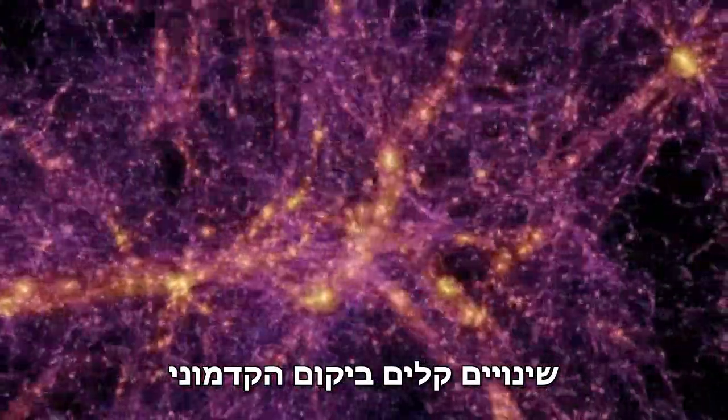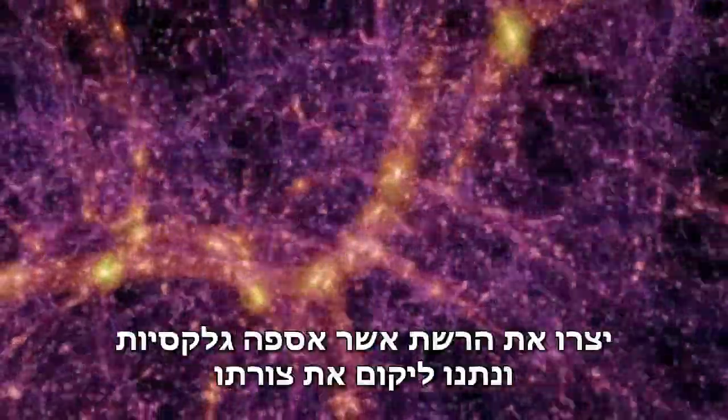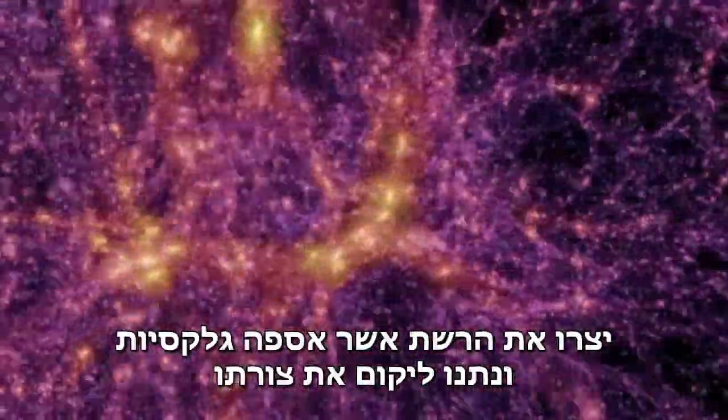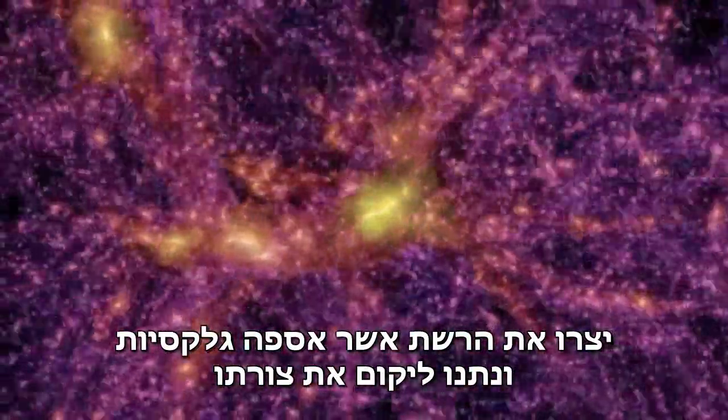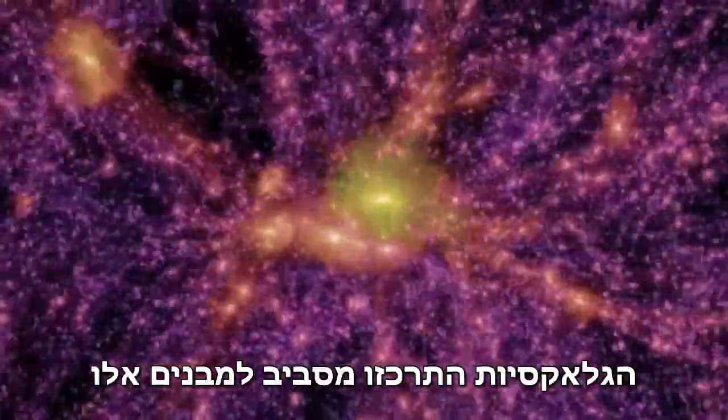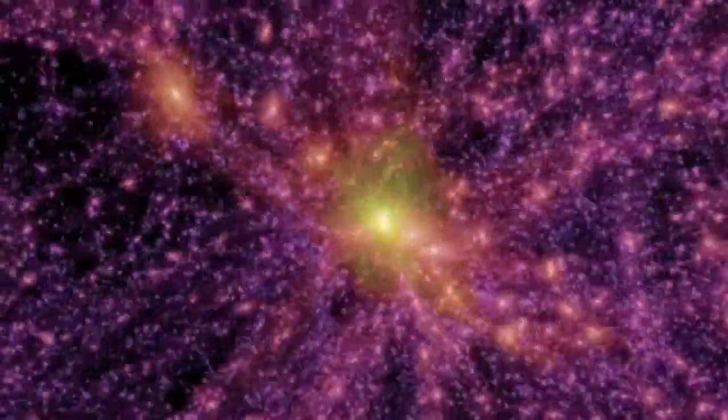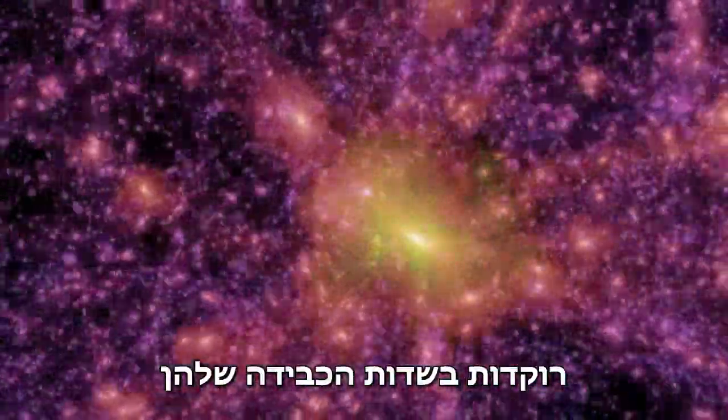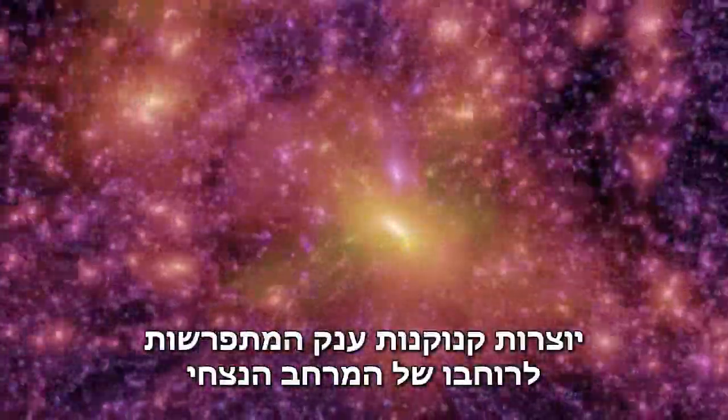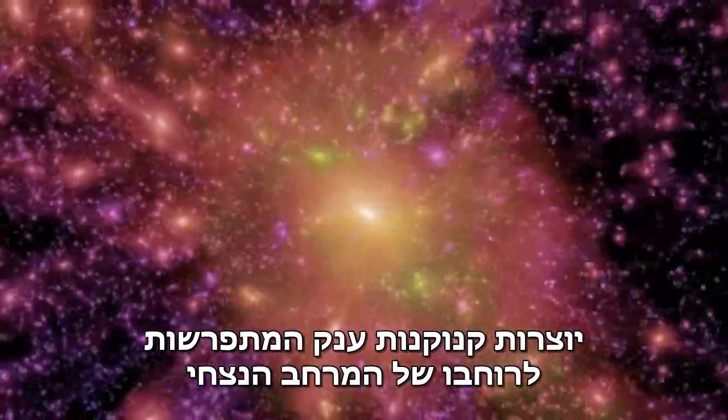Tiny variations in the primordial universe become the web that collected galaxies and gave the cosmos its form. These galaxies become distributed along these structures, dancing within their gravitational fields, forming giant tendrils reaching out across the span of eternity.